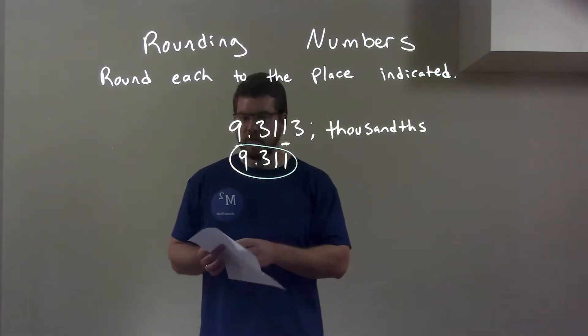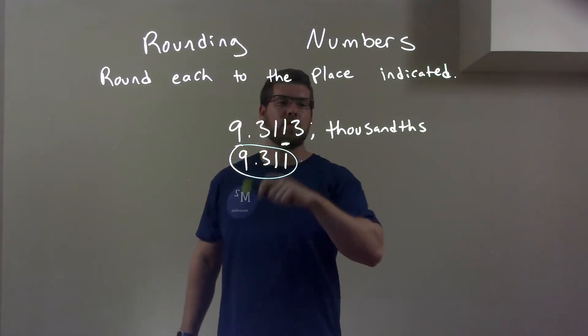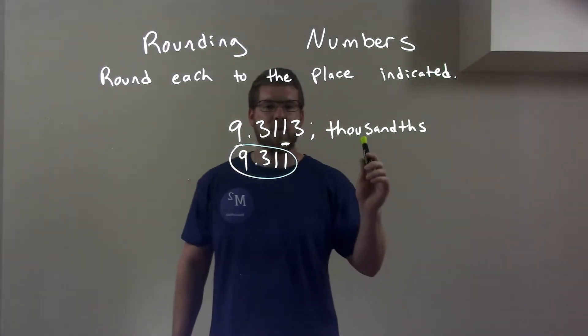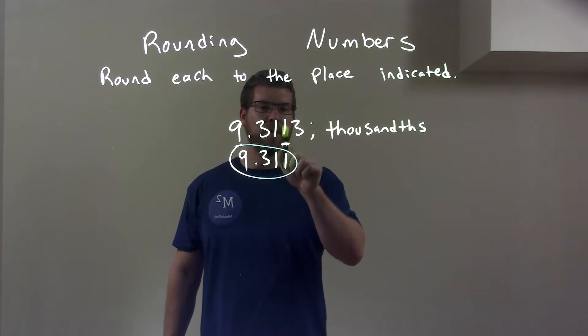So, quick recap. We're given 9.3113 and we're rounding to the thousandths. Well, the thousandths place is right there on the second one.